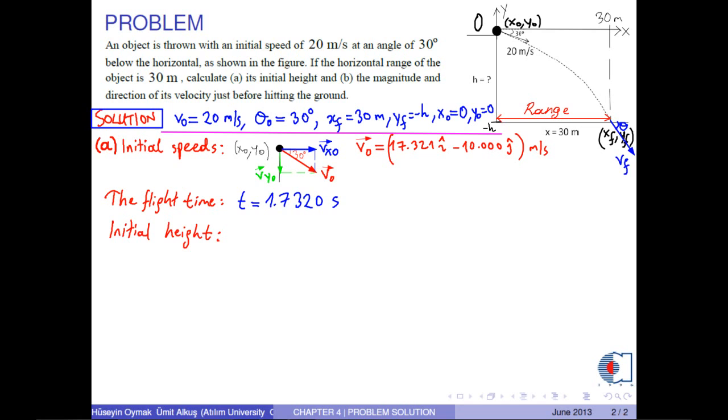Next, to find the initial height, we use the y component of the position. Then, it is convenient to use this formula. Here, y0 equals 0. And the y component of the acceleration, that is ay, is equal to the gravitational acceleration, which is in the negative y direction. So, we write minus g.